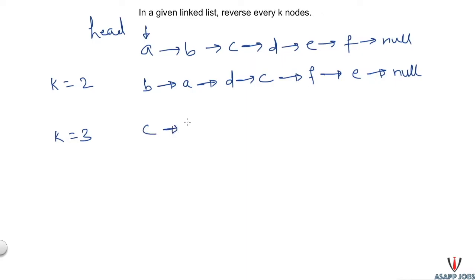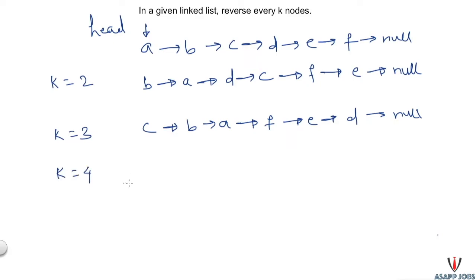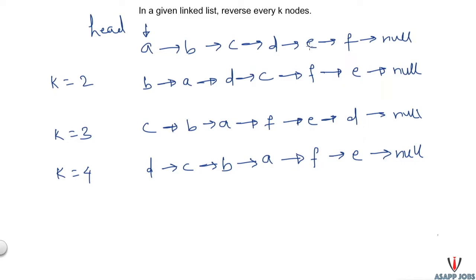Similarly, if k is 3, the output would be C, B, A, then A points to F, F points to E, and E points to D - reversing every three nodes. If k equals 4, the output is D, C, B, A, then A points to F, F points to E. Note that in the last segment we only have two elements E and F, so we reverse just those two. If k equals 6, which is the length of the list, we reverse the entire list.